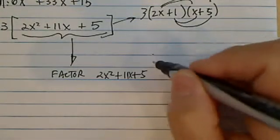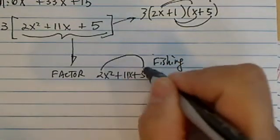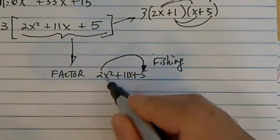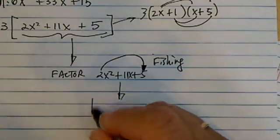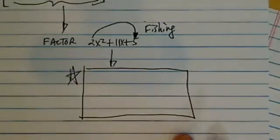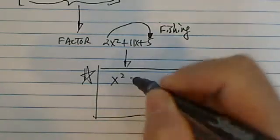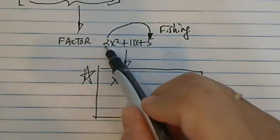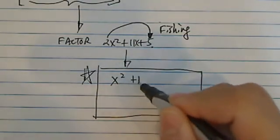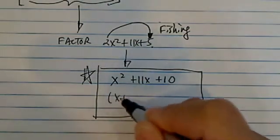This method is called kind of like a fishing method. We're going to pretend that we're going to factor something else — like we're going to toss a bait in there. You always want to draw an imaginary box. This is not the one we're actually factoring, but it's close to it. What you want to do is grab this coefficient, multiply it by the constant. You're going to have x squared plus 11x plus 10. We're going to factor this one — it's really easy.